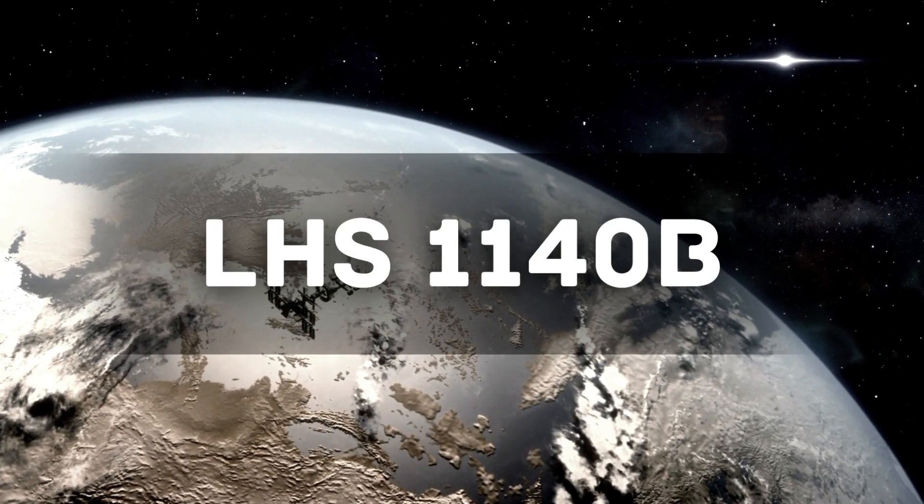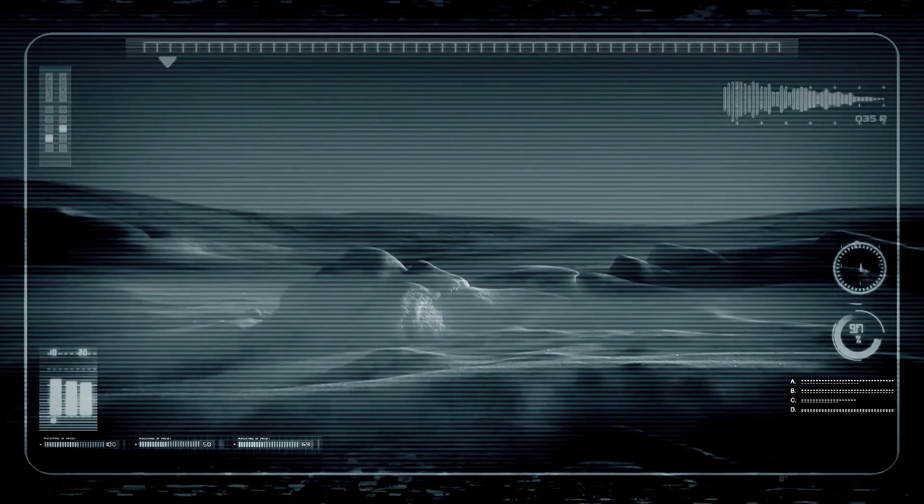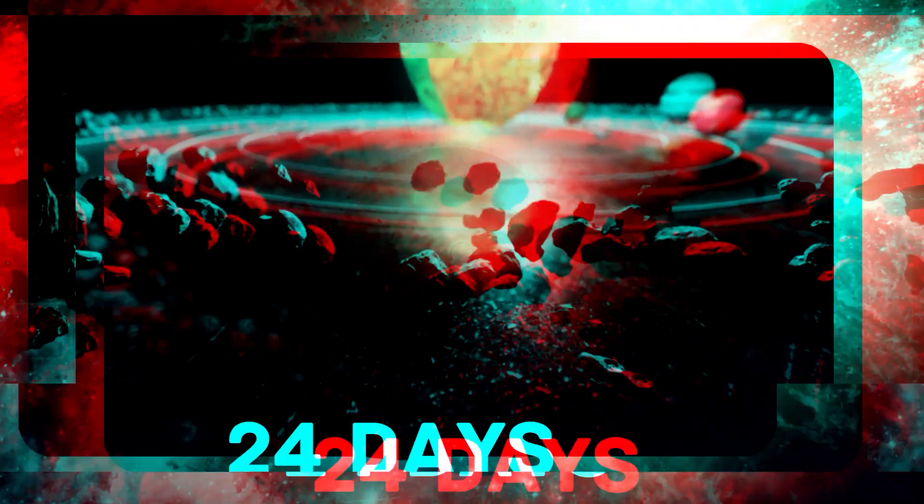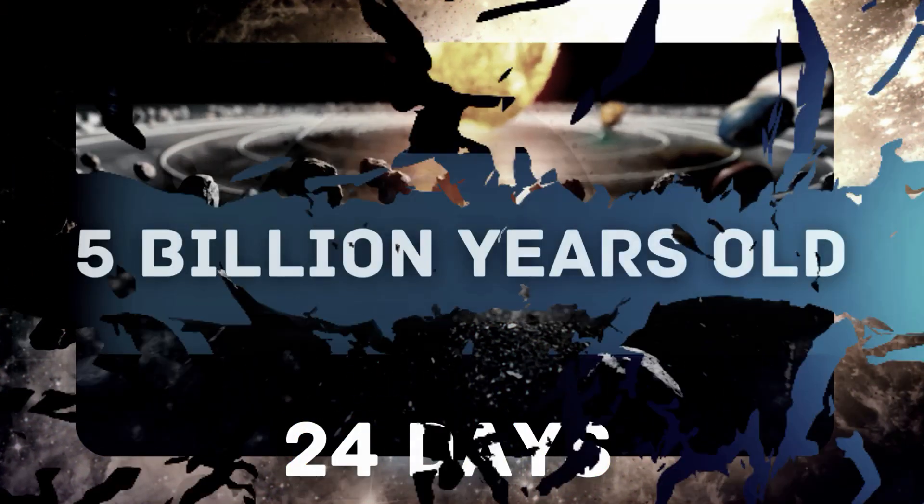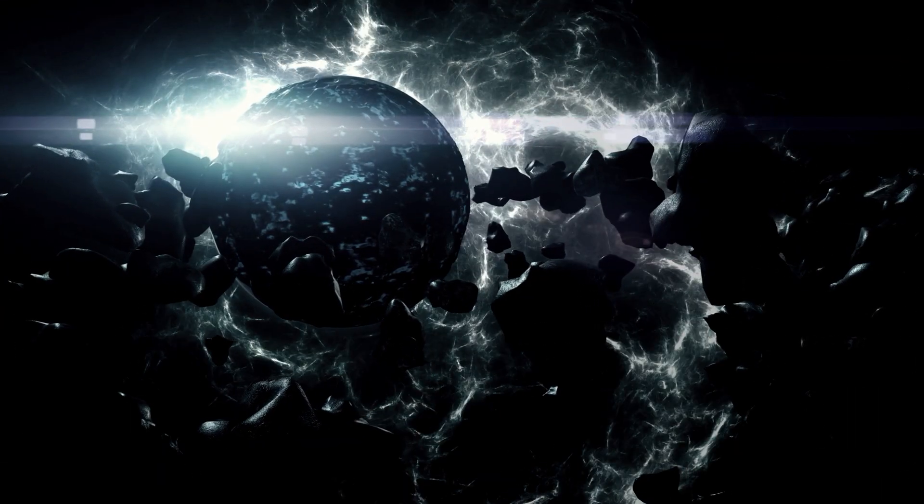Its official name is LHS 1140b and is about 1.2 times the size of Earth. This Earth-like exoplanet is rocky in composition and takes around 24 days to orbit its host star and is at least 5 billion years old.